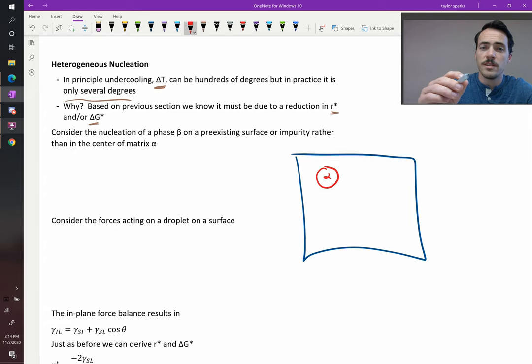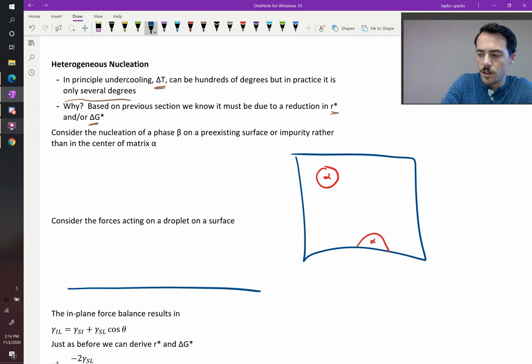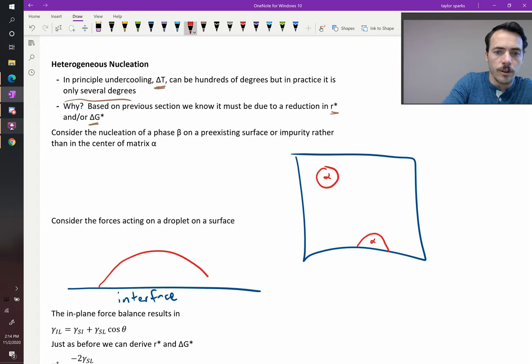Another possibility is this. What if your solid forms along the edge here? How does that change things? That changes things pretty dramatically, actually. Let's zoom in on the surface there. The surface looks like this. So we'll call this an interface. Here's our solid that's forming along there.